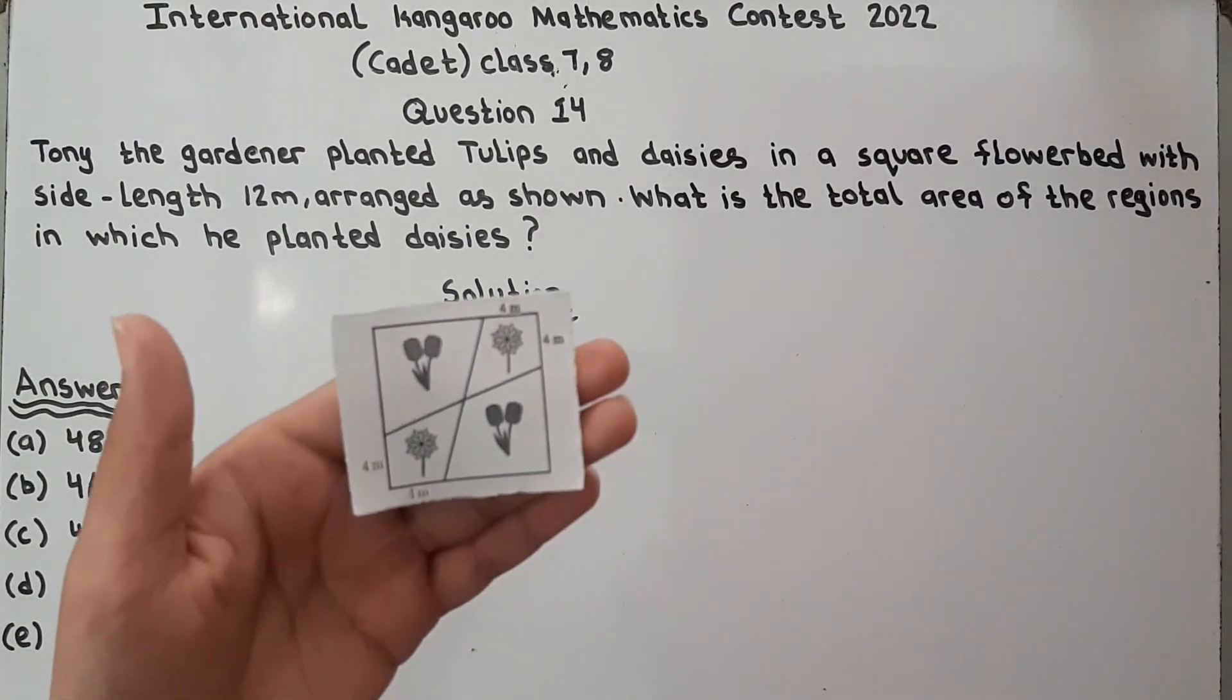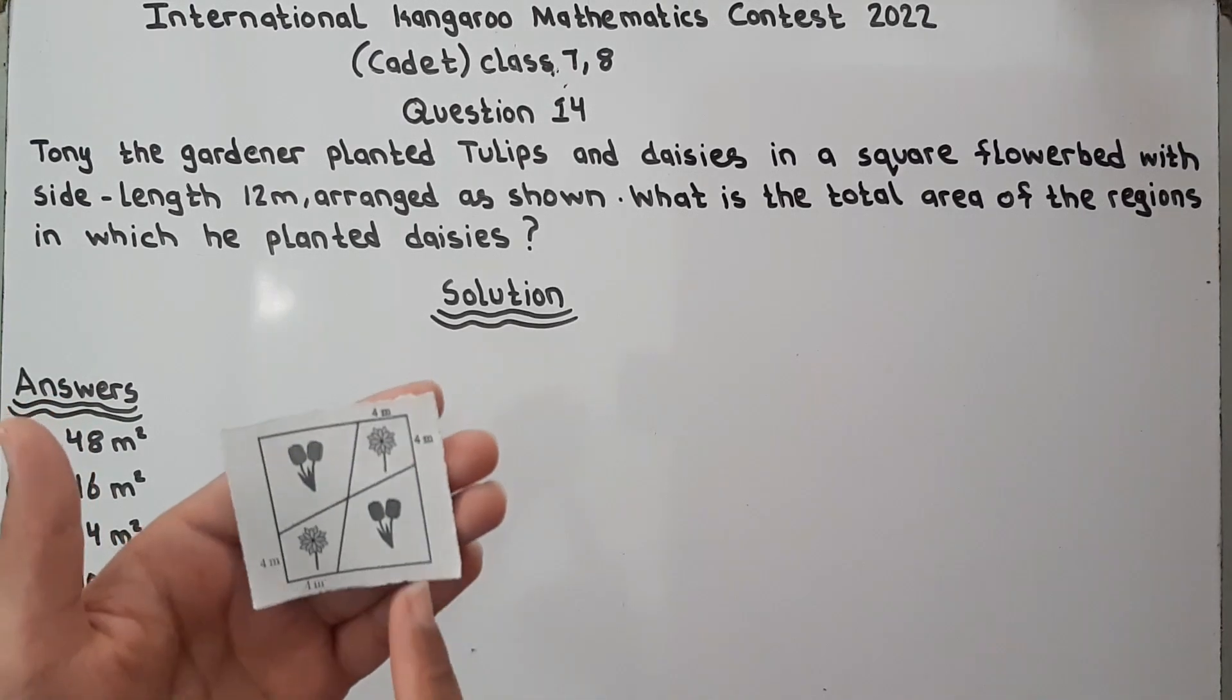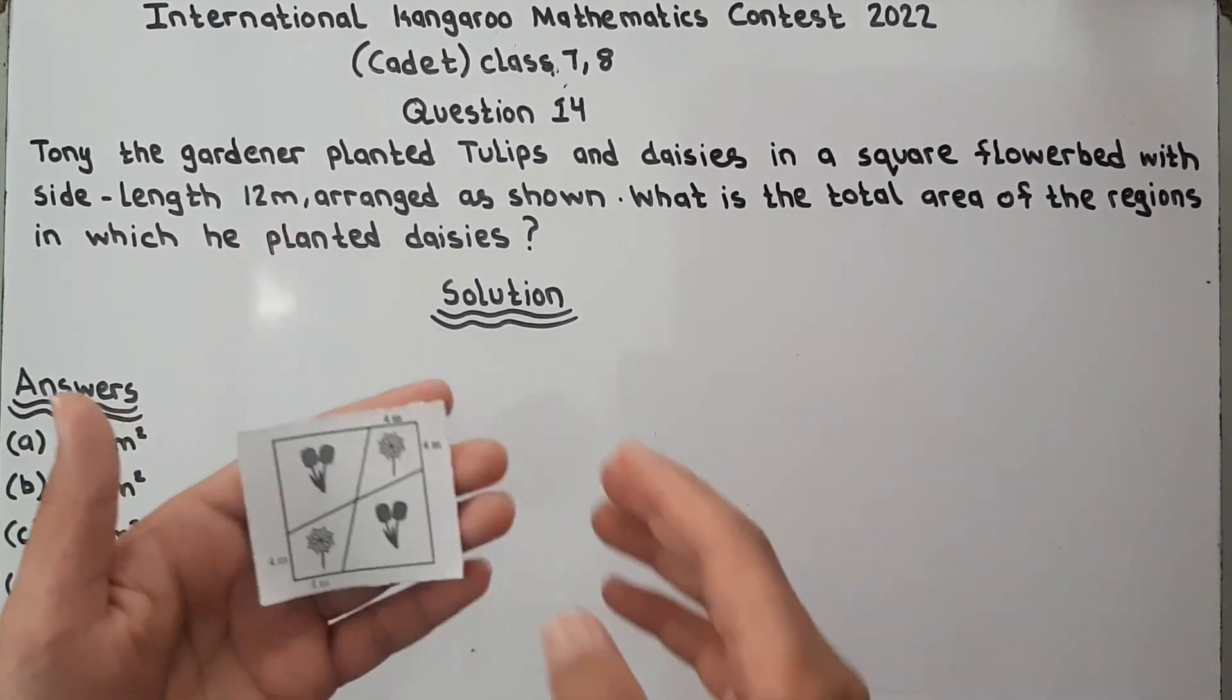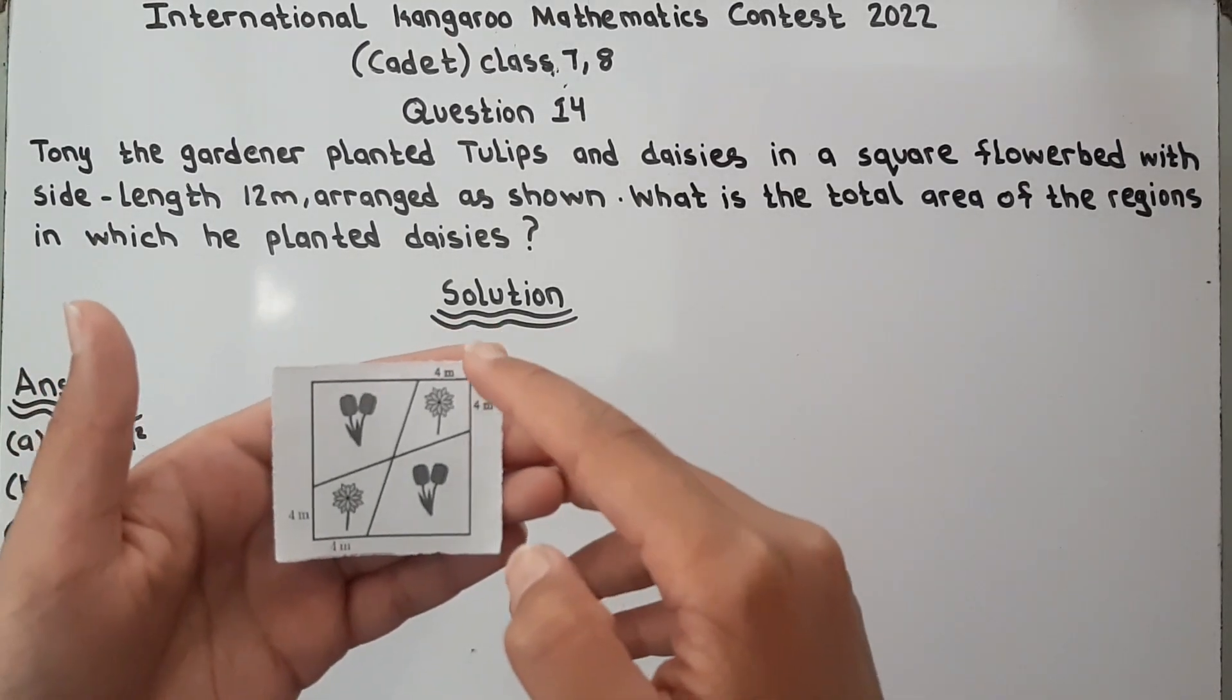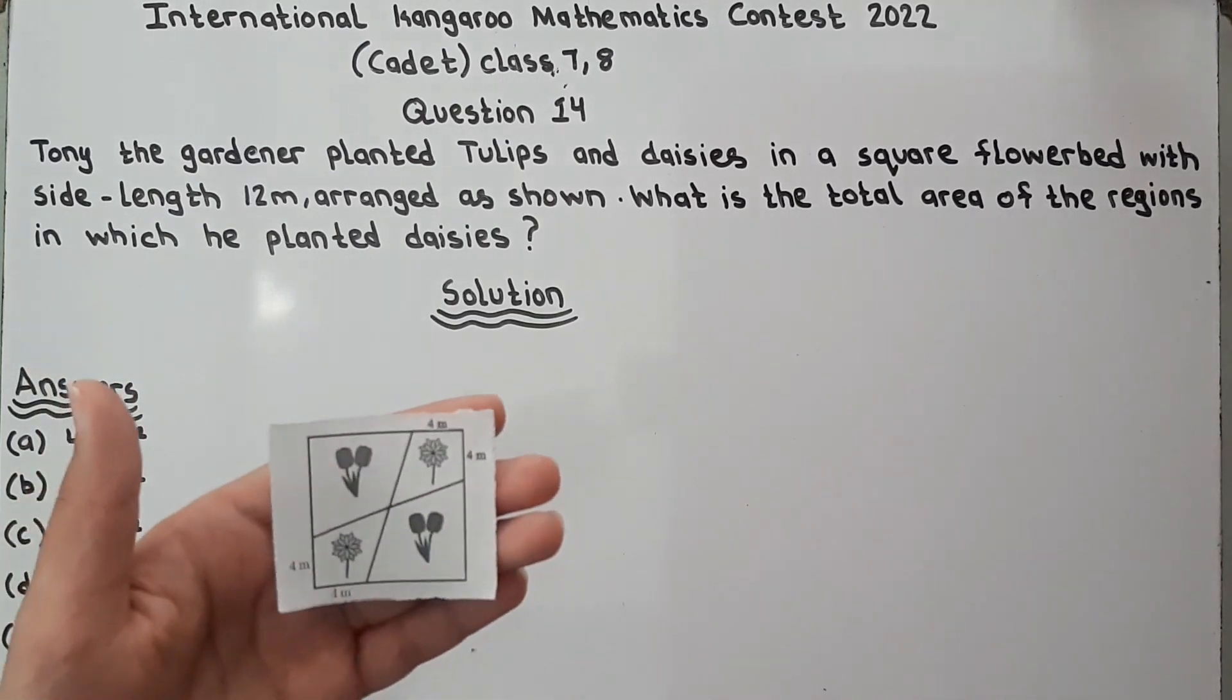So look, they are given this is 4 meters and this is 4 meters and side length is 12 meters. And this whole length is 12 meters and this is 4 meters so this will be 8 meters.